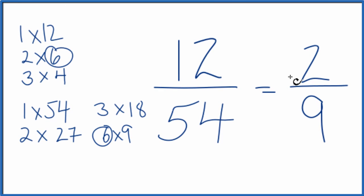So 2 divided by 9, 12 divided by 54, they're equal. They have the same value. It's just that we've simplified or reduced 12/54 down to 2/9.